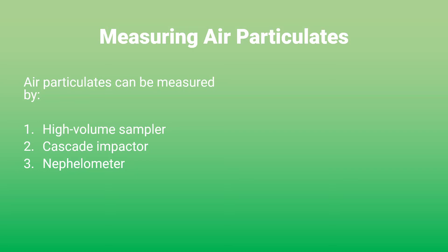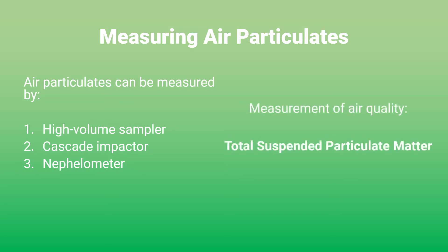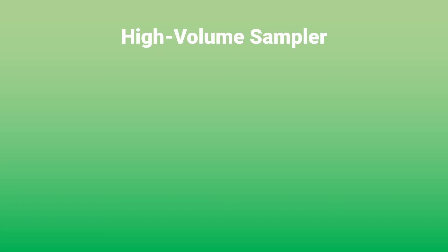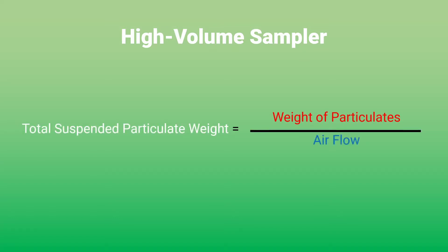Ambient air is monitored by both its total suspended particulate matter of a range of particulate diameters, which may be 10 micrometers or less. This is the general design of a high volume sampler, and the diagram shows the pathway of the air particles. There are two values measured in a high volume sampler: the weight of the particles and the air flow of filter.